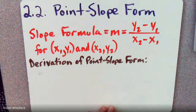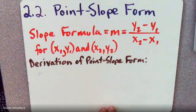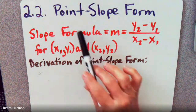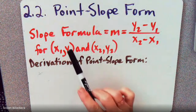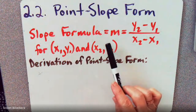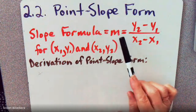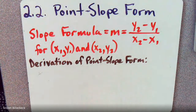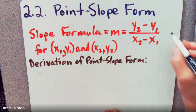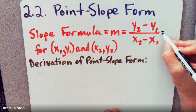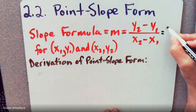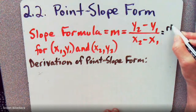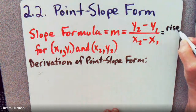Good morning, this is Ms. Billerbeck, and we're going to talk about Section 2.2, Point-Slope Form. So the slope formula is M equals Y2 minus Y1 over X2 minus X1, which is the rise over the run.